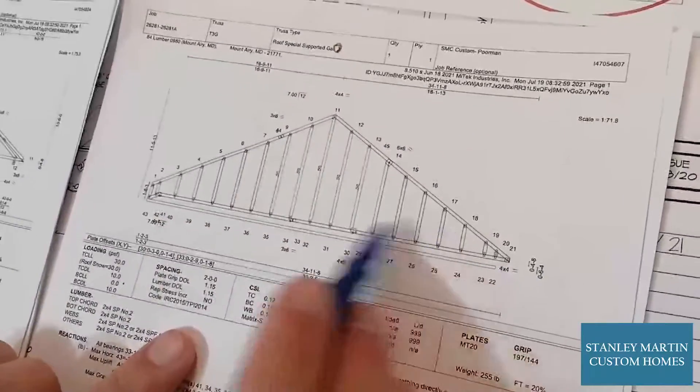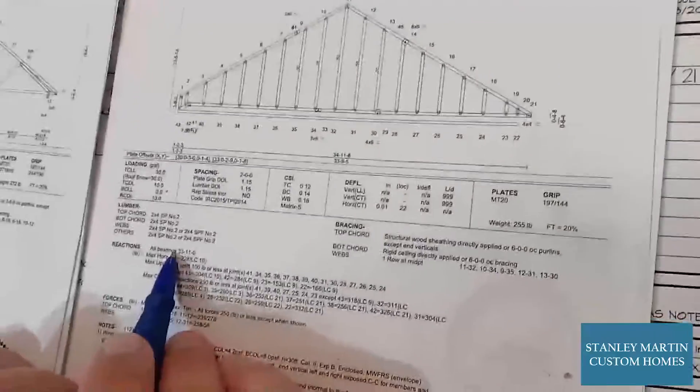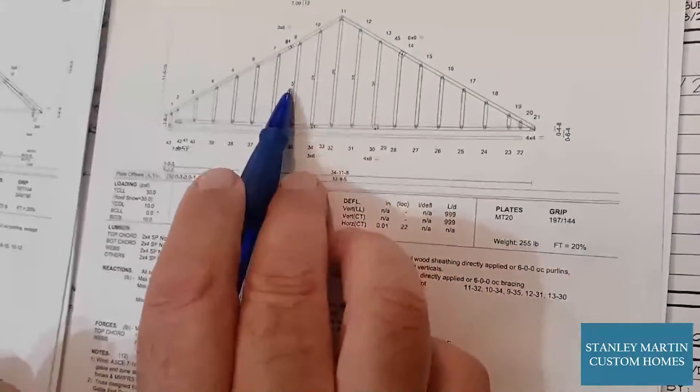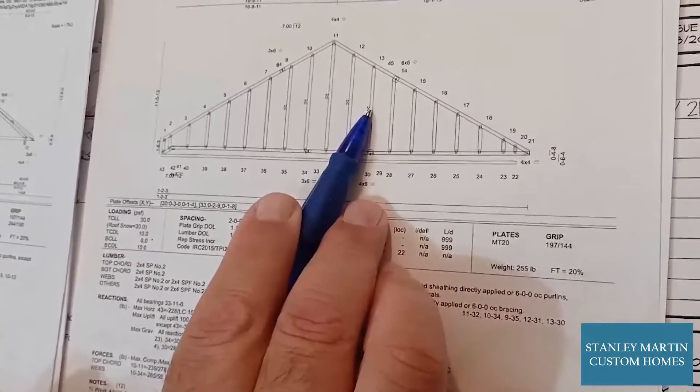This is a gable truss and what it shows us is not only the wind shear and deflection and snow loads, but also shows us these truss braces that we install. This is what the inspector looks at when it comes out to your home.